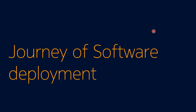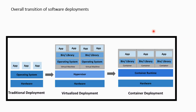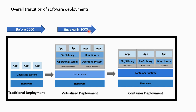Before starting the discussion of Kubernetes, let us understand the journey of software deployment in general. The overall transition of software deployments has observed everything from traditional deployment till containerized deployment. Before 2000, there used to be traditional deployment. Since early 2000, we have witnessed deployment on virtual machines. And since 2014 onwards, we have container runtime — running software inside a container, which is lightweight compared to a virtual machine. Let us understand all three phases in detail.